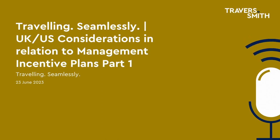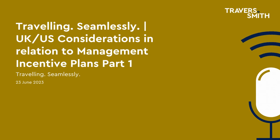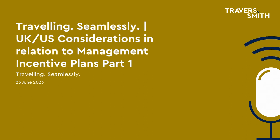So in the UK, in order to achieve capital treatment, one important factor is that the managers pay at least what we call unrestricted market value for any shares they acquire under the MIP. Unrestricted market value here means the amount which would be paid for the shares between a willing buyer and a willing seller, ignoring any restrictions like leaver provisions which apply to the shares. Is the position similar in the US? Yes, it is similar in the US. If an employee is purchasing equity and doesn't want to incur additional compensation income, they do need to make sure the purchase is at fair market value. Particularly in the private equity context, as a practical matter, fair market value is just going to be the per share or per unit price paid in connection with the M&A transaction by the private equity buyer, and that's going to be viewed as an arm's length value price. When determining that, we also don't take into account things like leaver provisions or other restrictions.